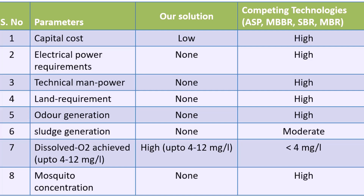So how does our treatment method fare against competing technologies? Remember the three characteristics of a preferred solution: the solution should be effective, scalable and cost effective. Most other forms of treatment struggle to tick all these boxes as well as our treatment is able to do. Often the capital costs of setting up a plant are high, whereas in our treatment there is no such requirement. Besides, you do not need technical manpower to do our treatment, and there is no requirement of additional land.